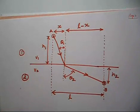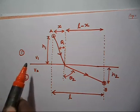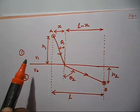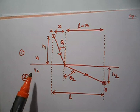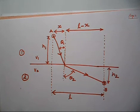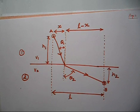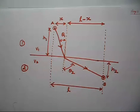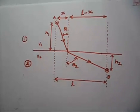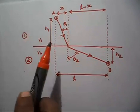Let me read the problem. A ray of light goes from point A in a medium where the speed of light is V1, to a point B in a medium where the speed of light is V2. The ray strikes the interface at a horizontal distance X to the right of point A. Find the time required to travel from A to B.